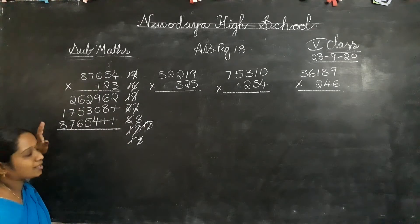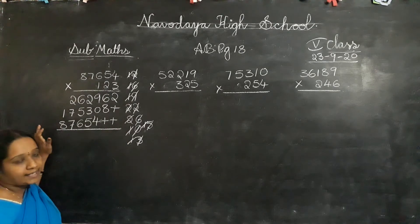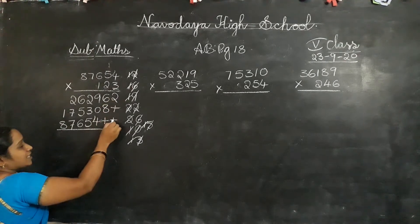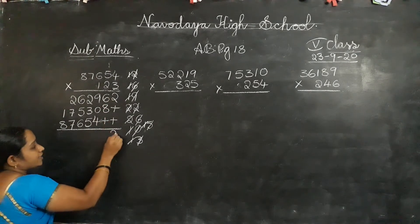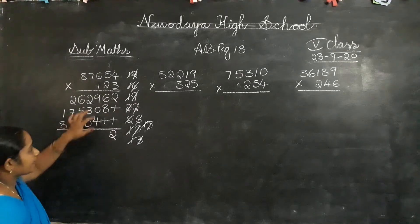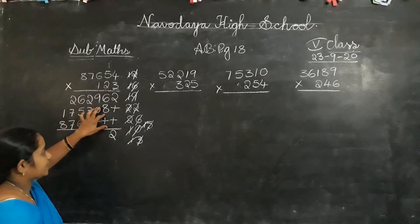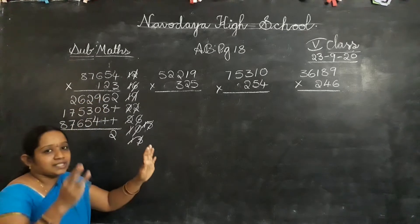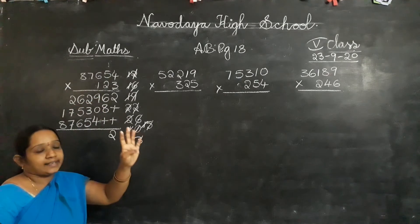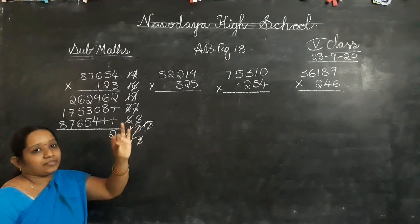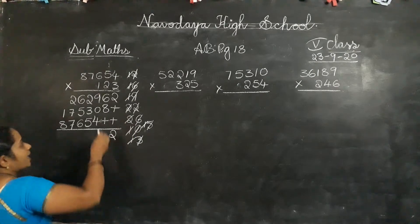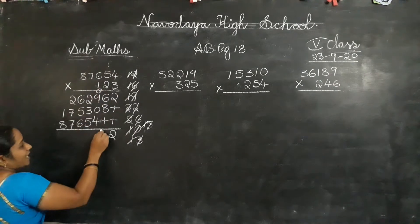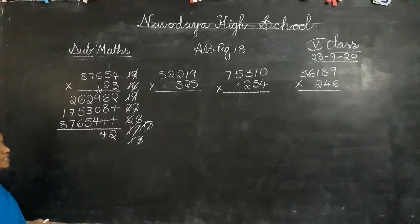Now what do we have to do? Addition. There is only 1 number in the 1's place, so write it down: 2. Next, 6 plus 8. Take 8 fingers down — 8 plus 6 is 14. 1 is carry forward, 4 is in the answer place.